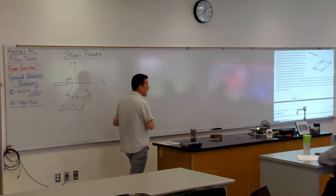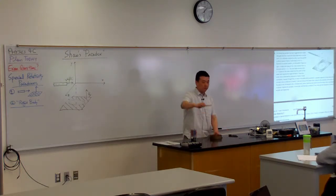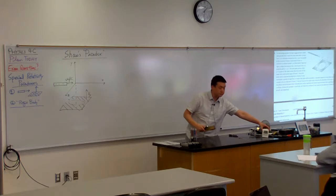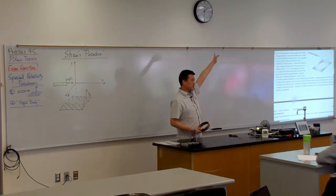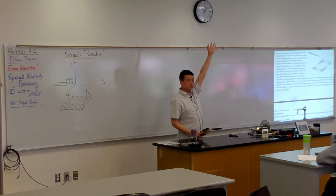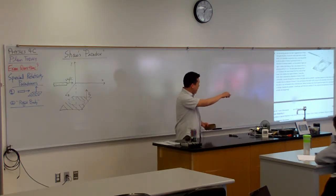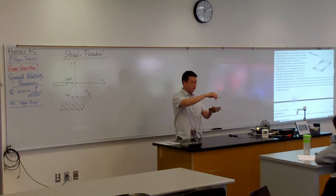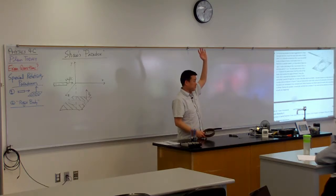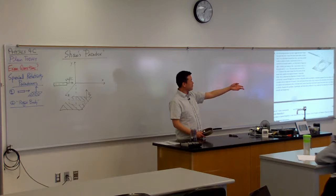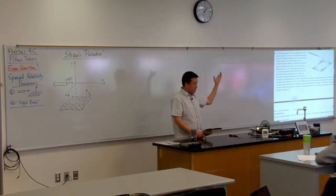All right, so how many of you think the ruler should go through the ring, go through the hole? Okay, how many of you think the hole will now be too small for the ruler to get through so the ruler will get hit by the hole? Or the edge of the hole? Some of you. Did you raise your hand for both of them? No. Okay, just the second one.